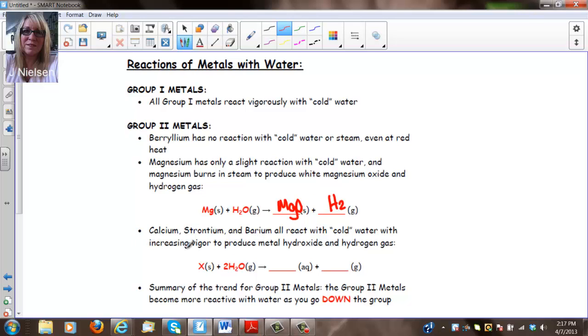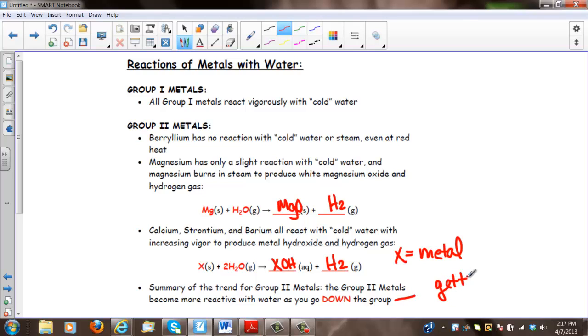Calcium, strontium, and barium all react with cold water with increasing vigor to produce metal hydroxide and hydrogen gas. So anytime you have these Group 2 metals, they're going to produce, they're going to grab the OH, so they're going to produce XOH. So this X is equal to the metal and hydrogen gas. The summary of the trend for Group 2 metals. Group 2 metals become more reactive with water as you go down a group. Group 2 metals become more reactive with water, which is the most reactive metal on the periodic table. And that concludes this unit. I will post the review lesson later.